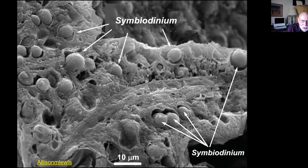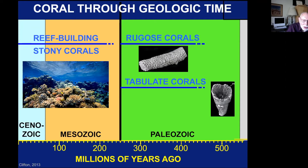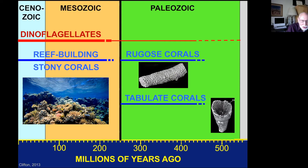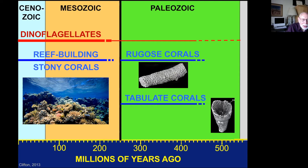This symbiotic relationship goes back a long way. Corals themselves go back hundreds of millions of years, but the stony reef-building corals only show up after the great extinction that ended the Paleozoic. The dinoflagellates also probably go back in time, coming into their own in the early Mesozoic — about the same time the stony corals were developing — suggesting that the evolution of dinoflagellates allowed this symbiotic relationship with stony corals to develop.